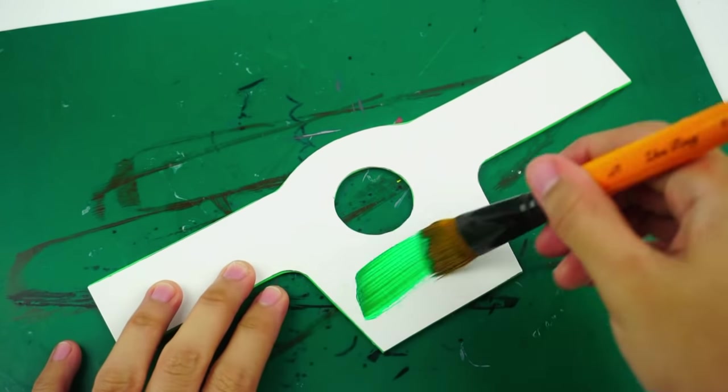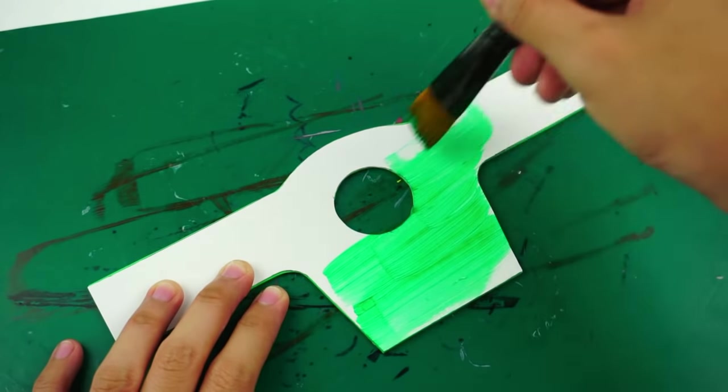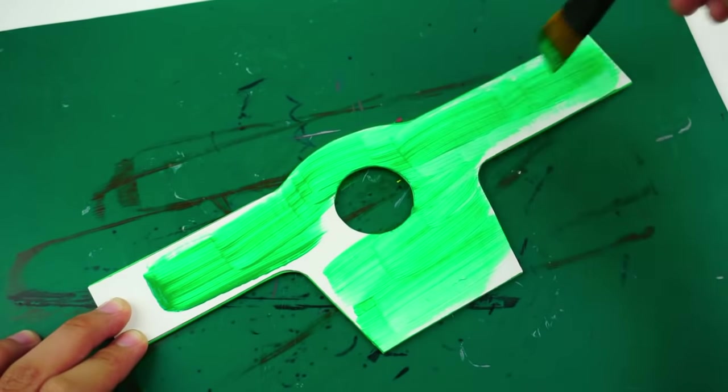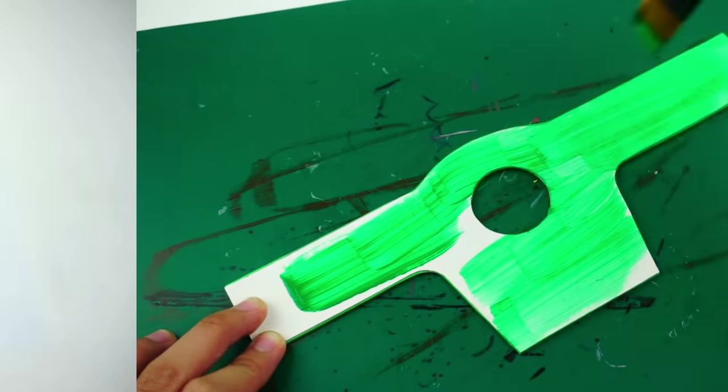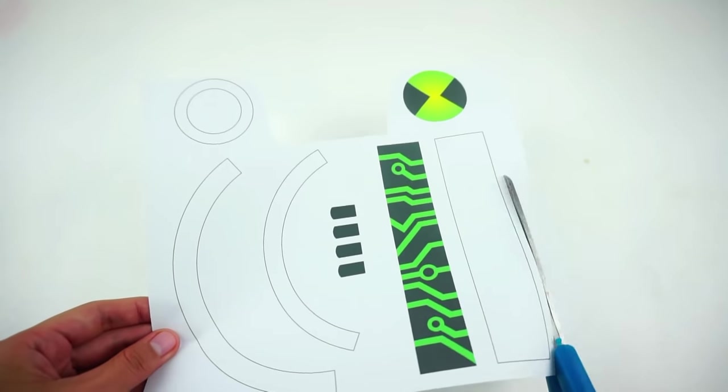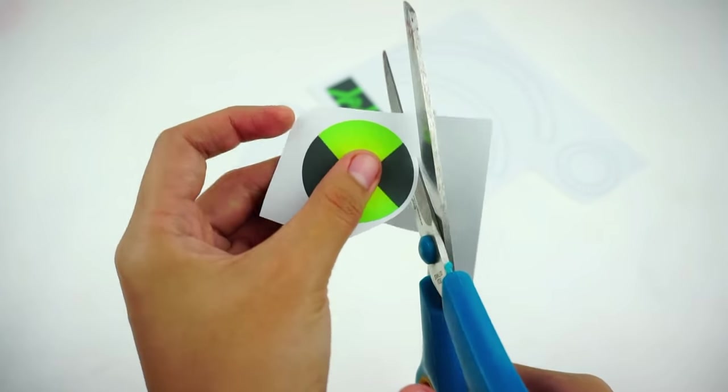To make it neater, I'm painting the inside with green paper. While we wait for the paint to dry, cut out the rest of the pieces and glue them onto thin cardboard as we did earlier.